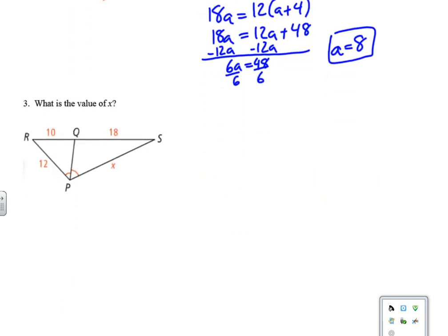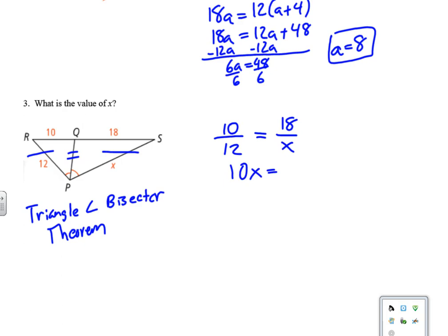Alright, last one for the unit and for this notes section. We'll have some more practice on the assignment, but for here, this is the triangle angle bisector theorem. And as I kind of visualize this, I just think okay, there's the fraction, there's the equal, there's the fraction. And so even though it's flipped, we can still kind of set it up in that same way. 10 over 12 equals 18 over X. So we do our cross product property: 10X equals 18 times 12. And so I'm just getting a calculator because I can't... I'm not thinking about 18 times 12 is 216. 216 divided by 10 would be 21.6. Alright, and so there you have it.